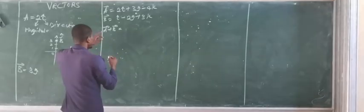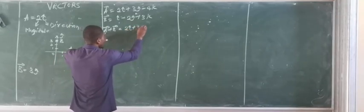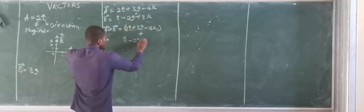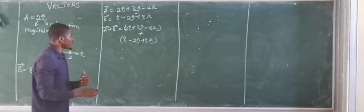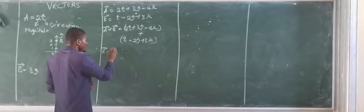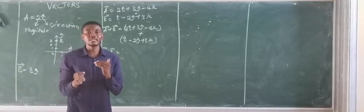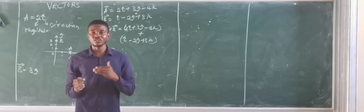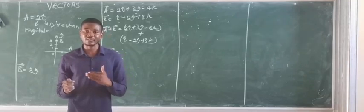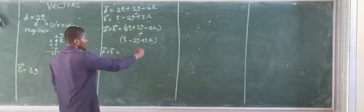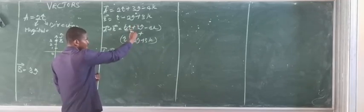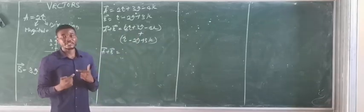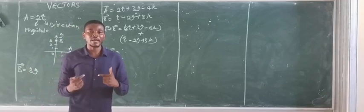So vector A plus vector B is 2I plus 3J minus 4K, and we are adding this to I minus 2J plus 3K. Only the I direction can add to the I direction, and only the J direction can add to the J direction — you cannot add I and J since they are not in the same direction.